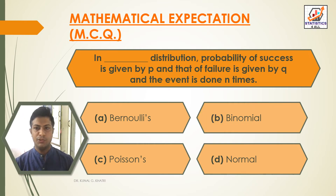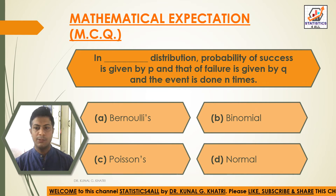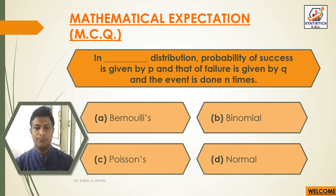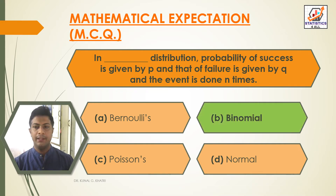In dash distribution, probability of success is given by P and that of failure is given by Q, and the event is done N times. Option A — Bernoulli's; Option B — Binomial; Option C — Poisson; Option D — Normal. The answer is Option B: Binomial. In binomial distribution, probability of success is given by P, that of failure is given by Q, and the event is done N times.